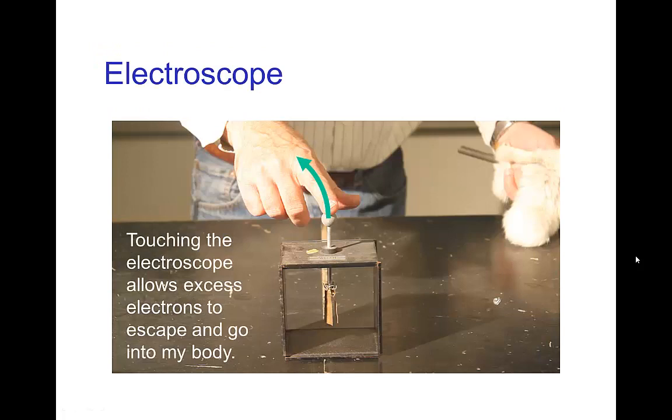Now when I touch the electroscope, those electrons are trying to get away from one another and so they easily escape into my body and now the electroscope basically becomes neutral again and the legs come back down.